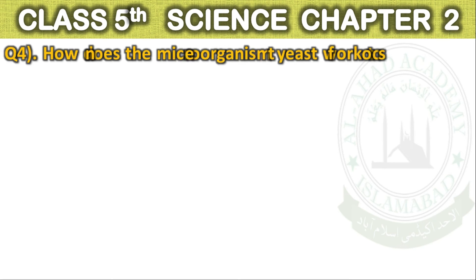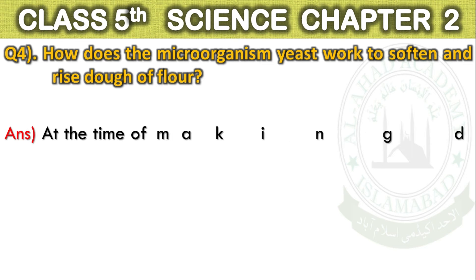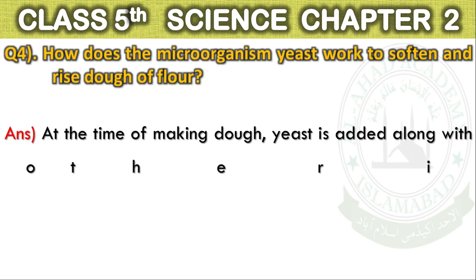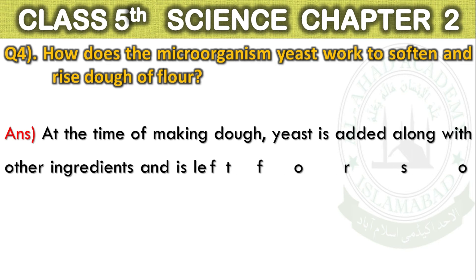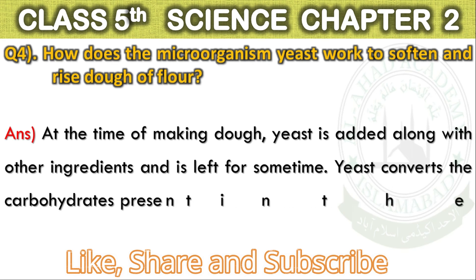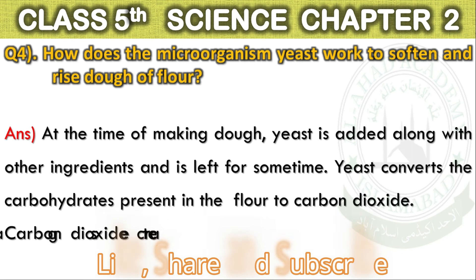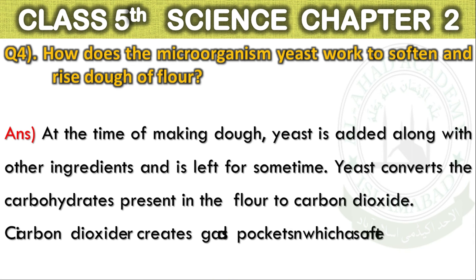Question No. 4: How does the microorganism yeast work to soften and rise dough or flour? Answer: At the time of making dough, yeast is added along with other ingredients and is left for some time. Yeast converts the carbohydrates present in the flour to carbon dioxide. Carbon dioxide creates gas pockets which soften and rise the dough.